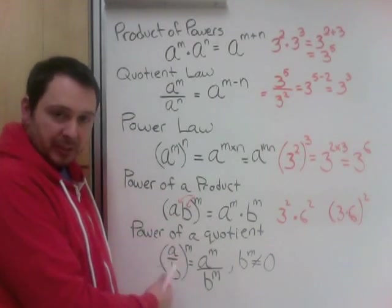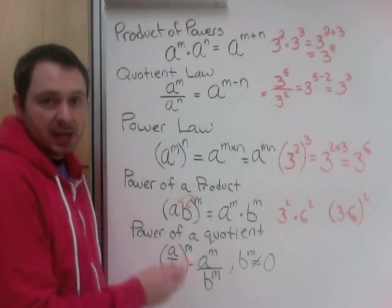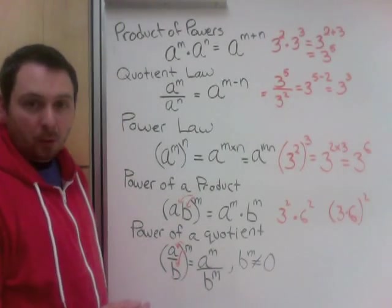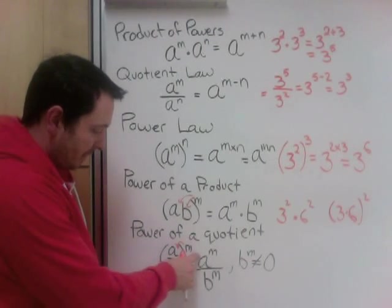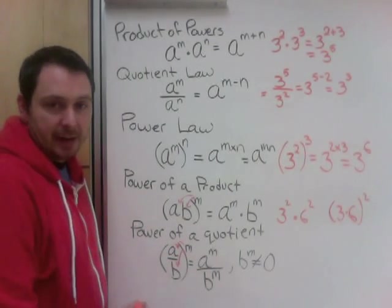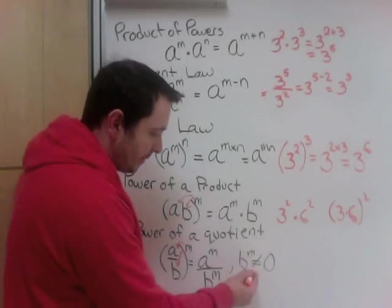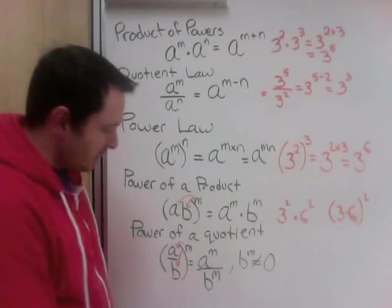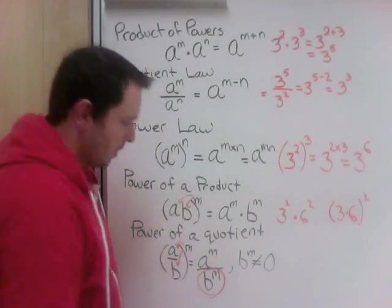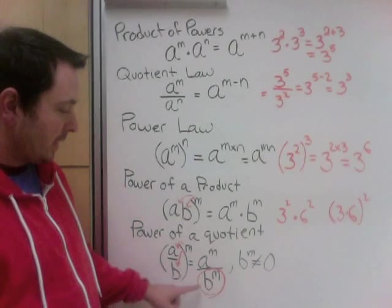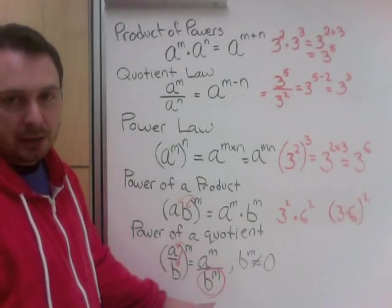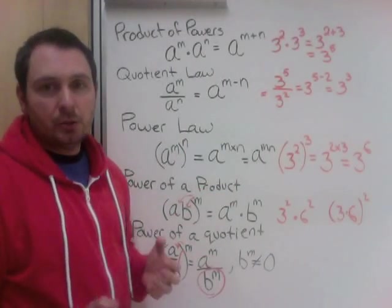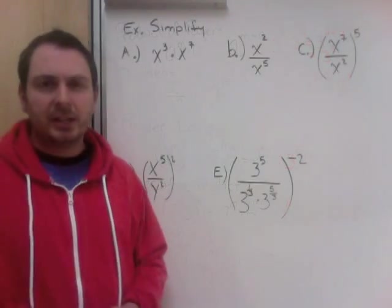Power of a quotient — we have a power, and quotient means dividing. Just like the last one, when there are brackets, this value has to affect both pieces. So it's A to the power of M divided by B to the power of M, with the rule that B to the M cannot equal zero — because you can never divide by zero. So now for the rest of the video, we're going to take these laws and use them to simplify different expressions.